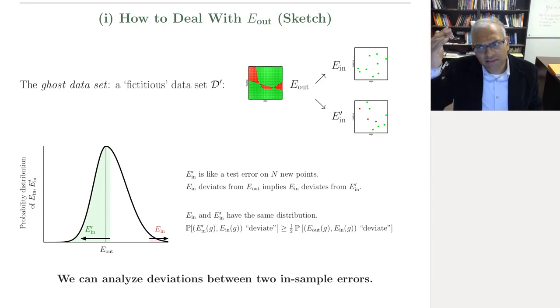And the key insight here is that if you were to generate another sample of data and compute the error of g on this other sample, you can call this other sample, it's typically called a ghost sample, we'll call it a data set prime.